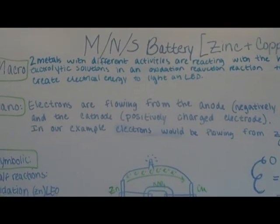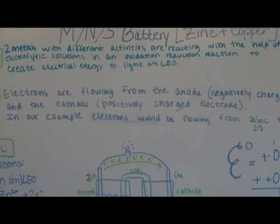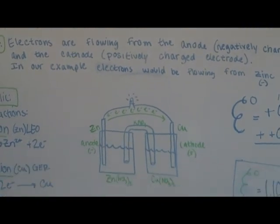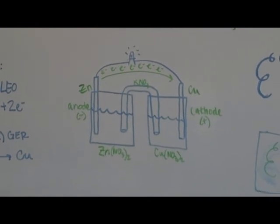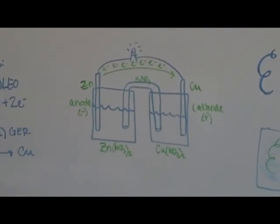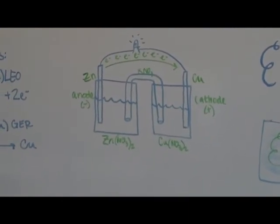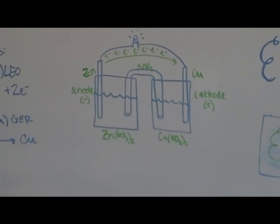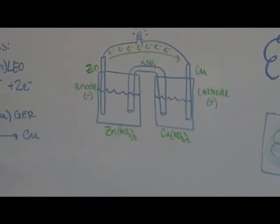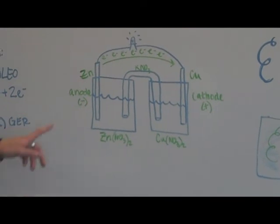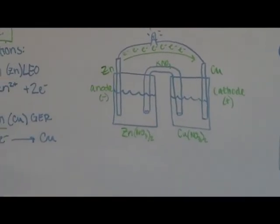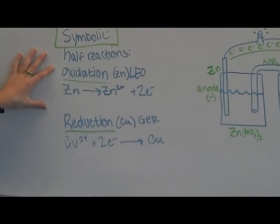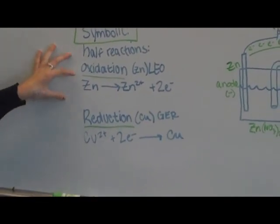At the nano level, we know electrons are flowing from the anode to the cathode. Anodes and cathodes are electrodes. An anode is a negatively charged electrode, and a cathode is a positively charged electrode. So electrons are flowing from one to the other—in this case, from zinc to copper, because zinc is an anode and copper is a cathode.